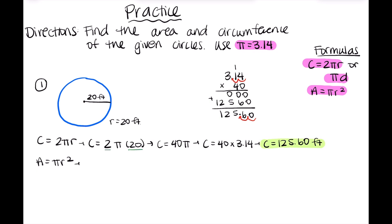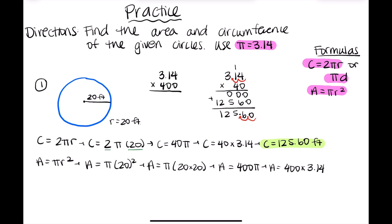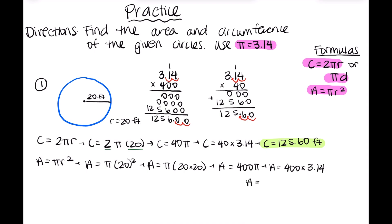Now we'll move into the area. For area, we have pi R squared, and we substitute in 20 for R: A equals pi times 20 squared, which is the same as pi times 20 times 20. We know that 20 times 20 is 400, so A equals 400 pi. Approximating pi as 3.14, we do 3.14 times 400, and we get 1,256. Remember, for area our unit is always units squared, so our answer is 1,256 feet squared.